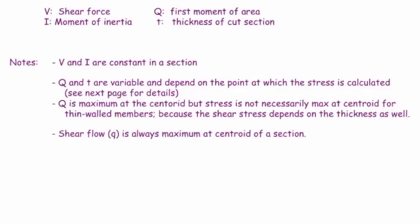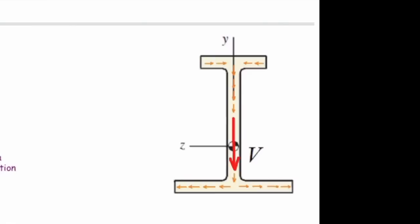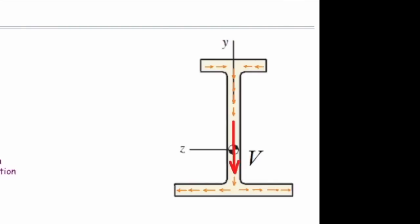That is not the case for Q. Q is determined for one specific point, so it depends on where you are determining shear stress. The same is true for thickness T. Consider this shape: if the thickness of the top element — the flange — is different from the vertical element — the web — then if my point is on the flange, I use the thickness of the flange; if the point is on the web, I use the thickness of the web. So thickness is not constant.